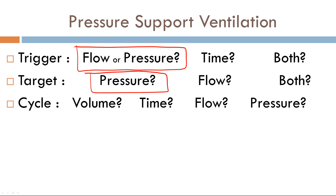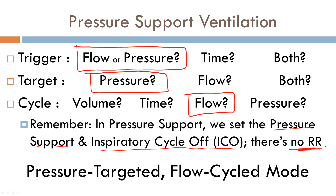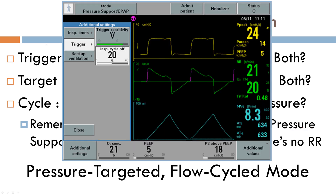The cycle variable in pressure support ventilation is flow — specifically the inspiratory cycle-off (ICO). After the flow reaches a certain percentage of the peak inspiratory flow, the breath cycles off. We set the pressure support (target variable) and the inspiratory cycle-off percentage (flow cycle). There is no set respiratory rate; all breaths are triggered by the patient. Pressure support ventilation is a pressure-targeted, flow-cycled mode.